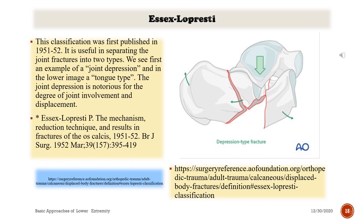The Essex-Lopresti classification was first published in 1952. It is useful in separating intraarticular fractures into two types: joint depression and tongue type. The joint depression type is notorious for the degree of joint involvement and displacement. Reference: Essex-Lopresti P. The mechanism, reduction technique, and results in fractures of the os calcis. British Journal of Surgery, 1952 Mar; 39(157): 395–419.